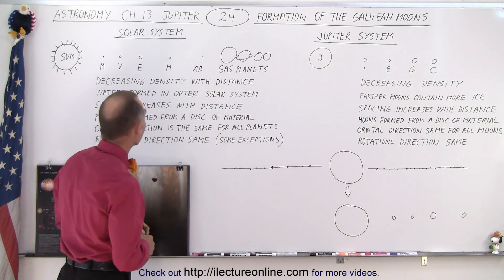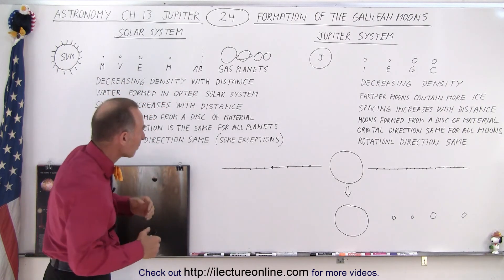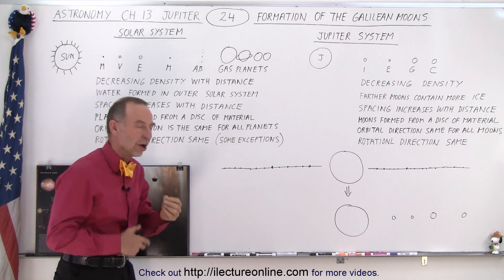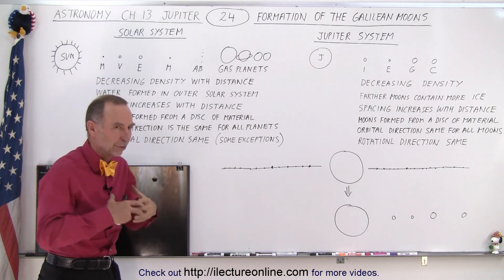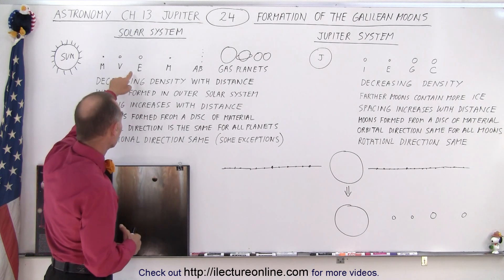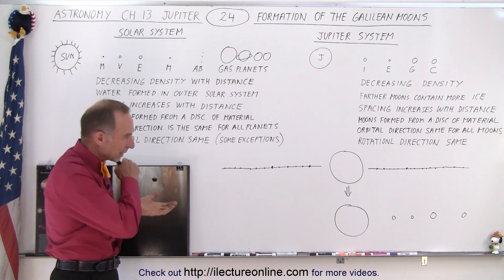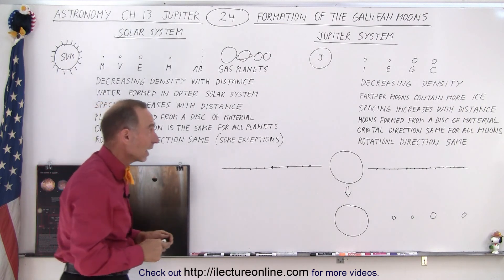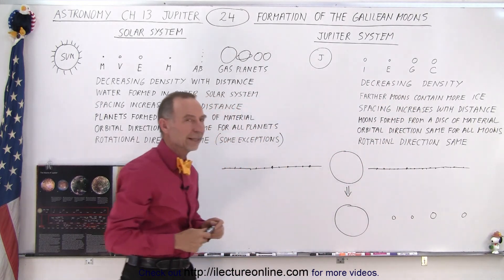First of all, we recognize that for both systems we have decreasing density with distance. Even though it may not be purely that way for the planets — Mercury has a greater uncompressed density compared to Venus and Earth because it has a greater proportion of metal — because of the compression due to the size of the Earth and Venus, they do have a greater density than Mercury. But if you just look at the content of the material, you'd see the decreasing density, and you see the very same thing for the four Galilean moons with distance.